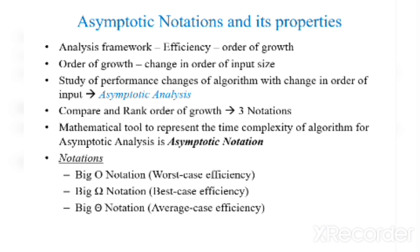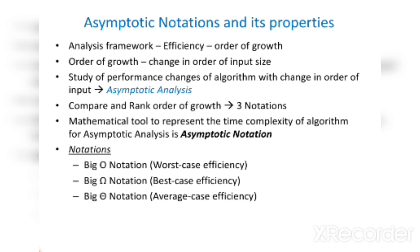It is concerned only with the rate of growth. We are going to see three notations: Big O notation, which defines the worst case efficiency; Big Omega notation, which defines the best case efficiency; and Big Theta notation, which defines the average case efficiency. Worst case efficiency is defined as the maximum number of steps taken on any instance of size n. Best case efficiency is defined as the minimum number of steps taken on any instance of size n. Average case efficiency is defined as the average number of steps taken on any instance of size n.